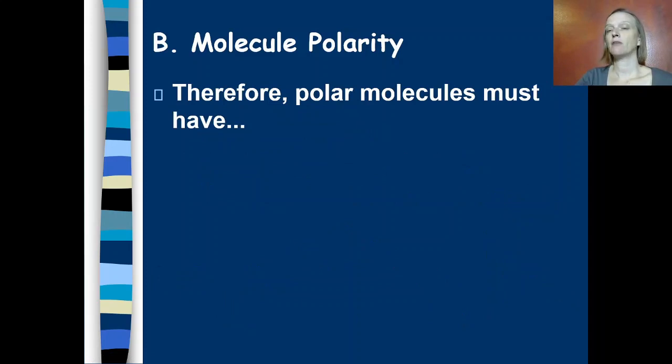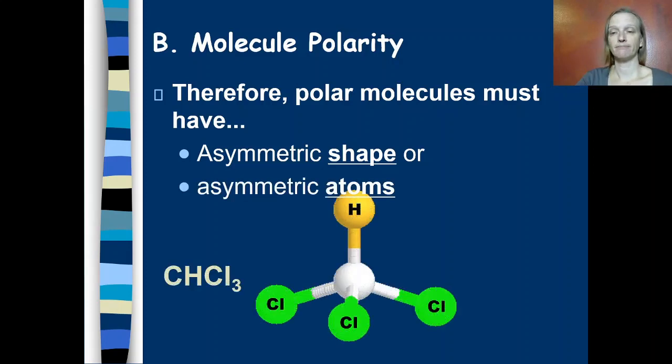So what must we have to have a polar molecule? We must have either an asymmetric shape or asymmetric atoms. We need asymmetric shape or asymmetric atoms. So this here is trichloromethane, which looks very similar to methane. But a tetrahedron shape is a perfect four-way tug-of-war between these four atoms. So if I have the same four atoms coming off of my central carbon, it is exactly a perfect four-way tug-of-war between those four atoms. This is not a polar molecule.